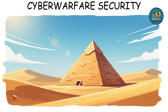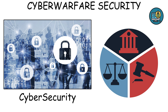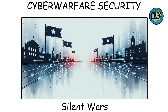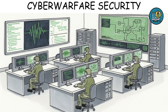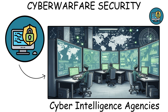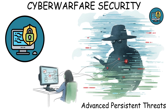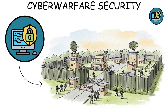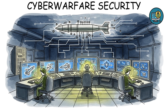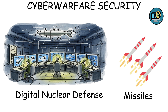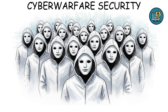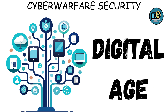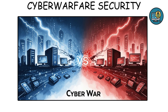Cyber warfare security. Finally, the top of the pyramid, where cybersecurity becomes a matter of national power. Governments now wage silent wars online. They attack power grids, steal military data, and plant malware in enemy systems years before conflict even begins. This level includes cyber intelligence agencies, advanced persistent threats (APTs), and defense networks built to withstand attacks from entire nations. Think of it as digital nuclear defense — code instead of missiles. Countries like the US, China, and Russia invest billions into this layer, building hackers, not just soldiers. And in this age, the next world war might not start with bombs, but with bytes.